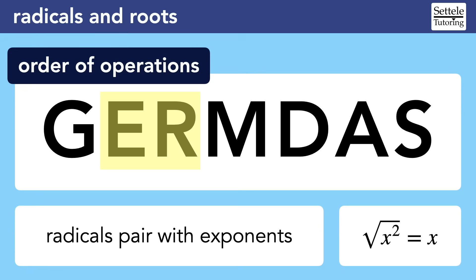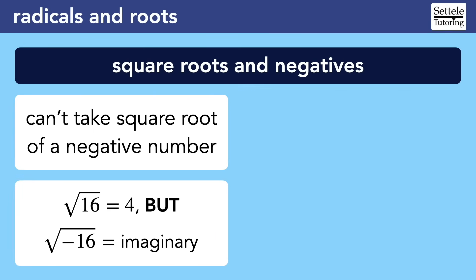Most of the time, we'll use radicals to cancel out exponents when we're trying to solve for x. We also use exponents to cancel out radicals, but as we'll see later, we probably want to let the calculator handle those kinds of equations for us. For now, let's start with some simple but very important rules for radicals having to do with negatives.